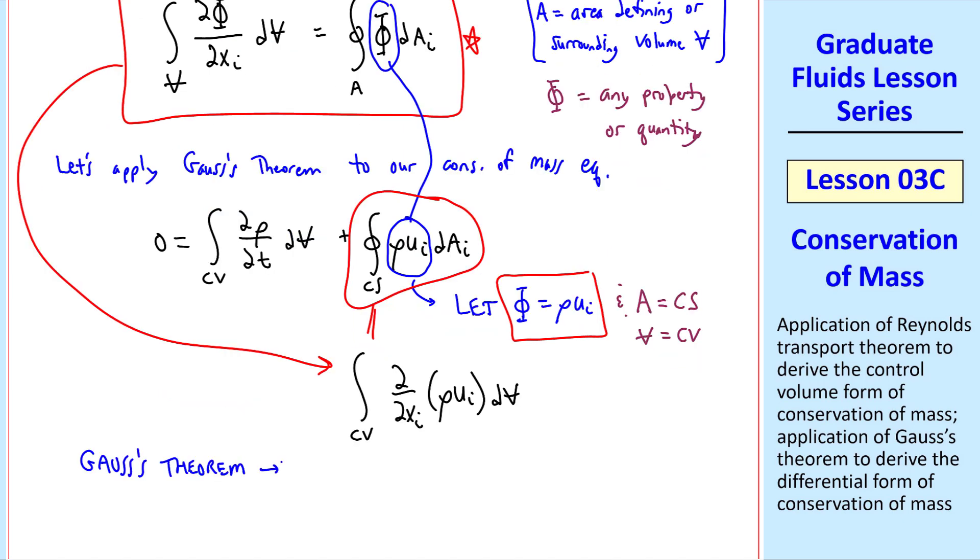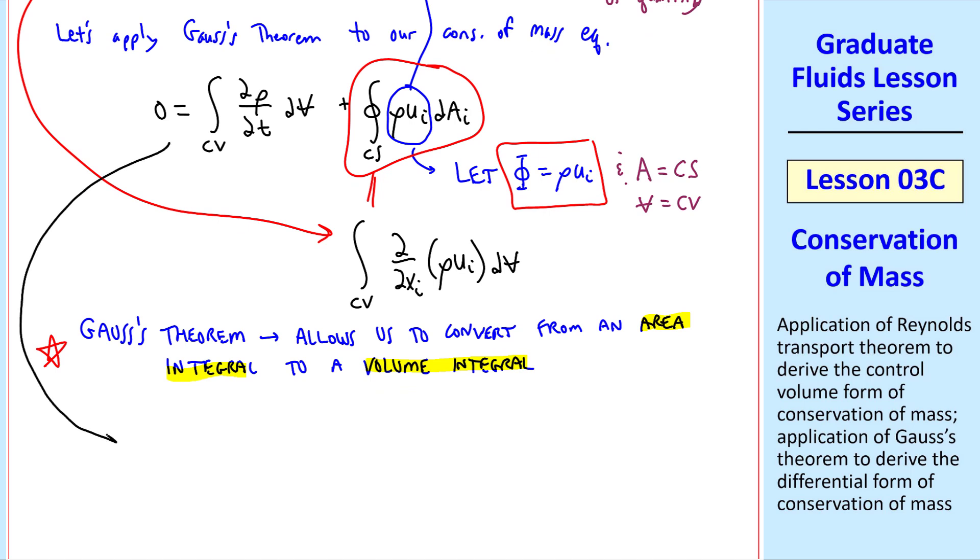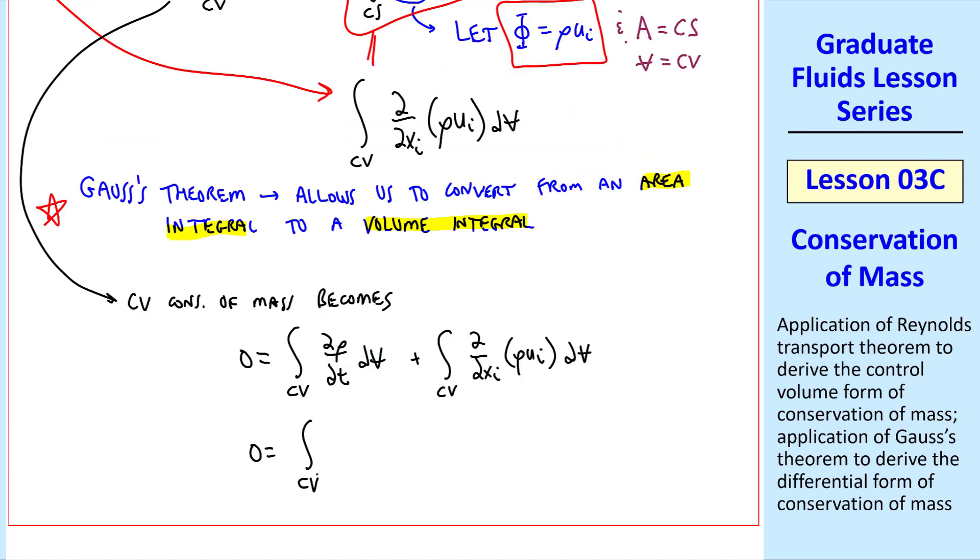Just a comment here about the usefulness of Gauss's theorem. It allows us to convert from an area integral to a volume integral. This will become extremely useful in much of our work. Why? Because now we can rewrite this equation, the control volume conservation of mass equation, as 0 equals integral over the control volume, del rho del t, dv, plus another integral over the control volume, del del xi rho ui, dv. And then combine these two integrals under one roof, so to speak. In other words, under one integral sign, as we show here.